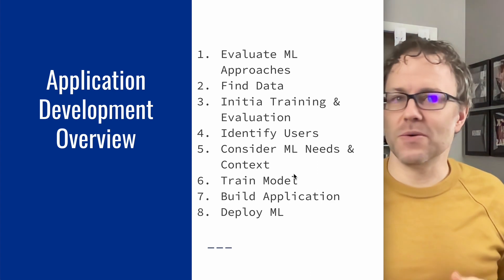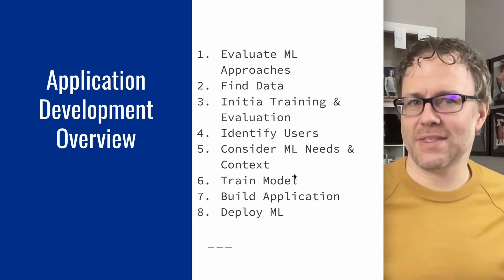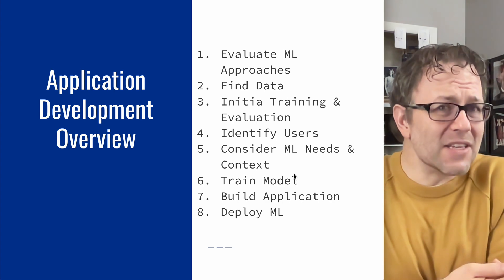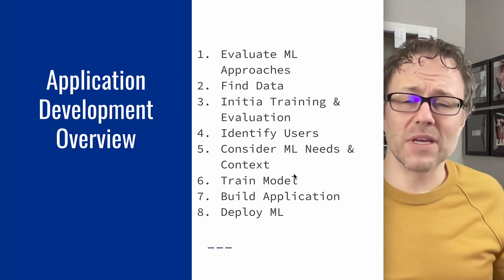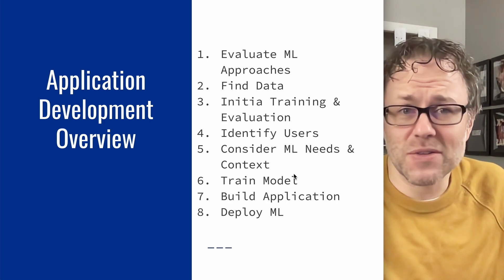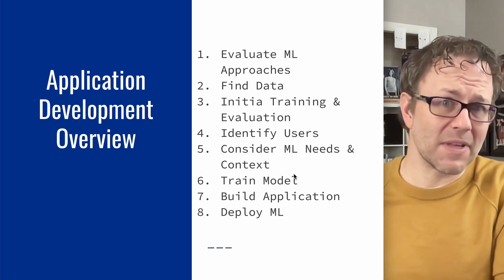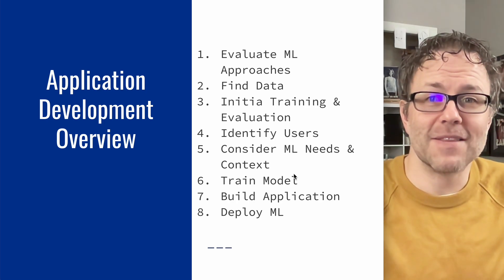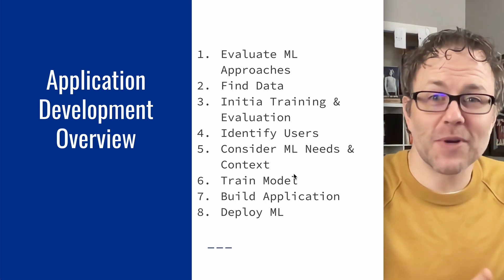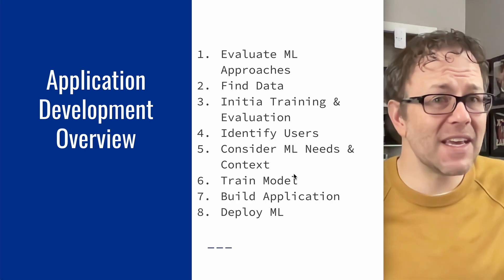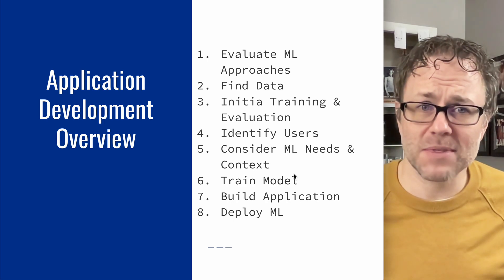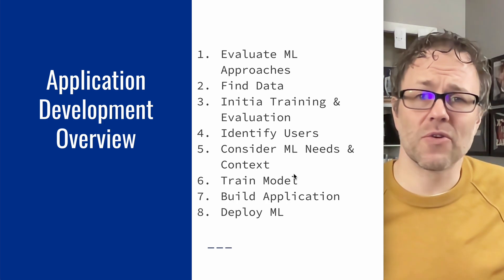One thing we can do is evaluate different machine learning approaches — can we use a pre-trained model, an off-the-shelf model, or do we need to train something from scratch? These are all different ways to think about model development. We also have to find data, because even with transfer learning we might need data specific to our application. Then there's initial training and evaluation: train it once with a sample of data, and with tabular data it's common to pick a random sample and train just to see which direction things are going.